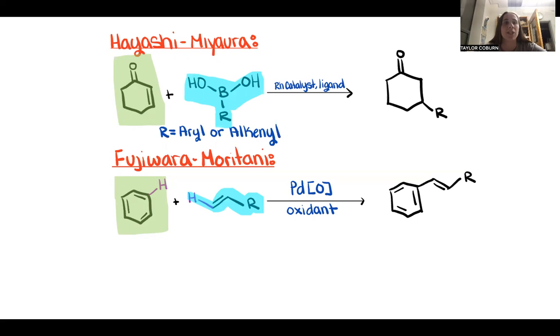As for reactants, in the Hayashi-Miyaura reaction, we're using those boronic acid derivatives, where in the Fujiwara-Moritani reaction, we are using alkenes.